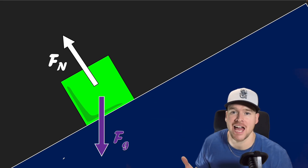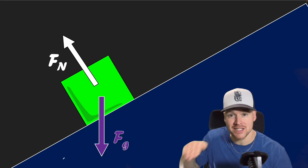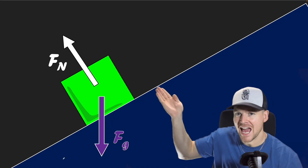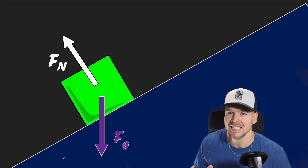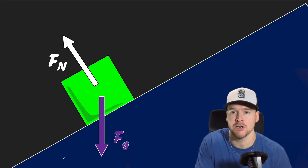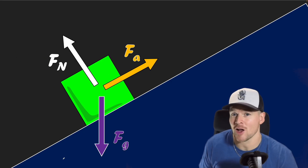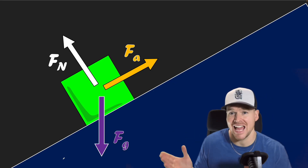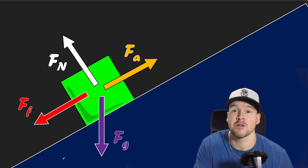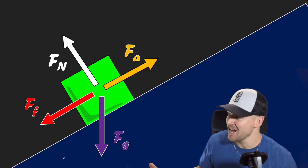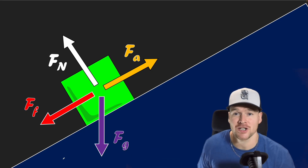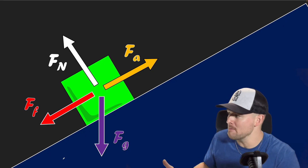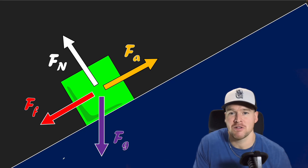Whenever we're dealing with angled vectors, we want to break them into their horizontal and vertical components. That makes this trickier: we have gravity going down at an angle that we need to break into its parts. It gets worse because we can have another force — maybe we're trying to push the mass up the ramp, which is also at an angle. Then there could be a third force, friction, also at an angle. So we end up with three vectors all needing to be broken into components — quite a mess.